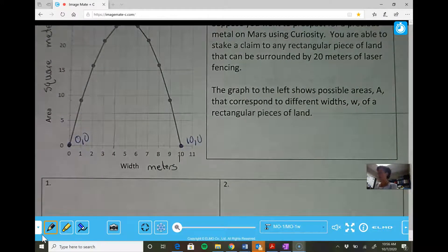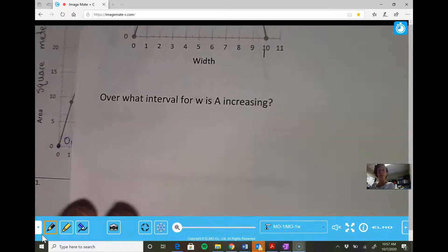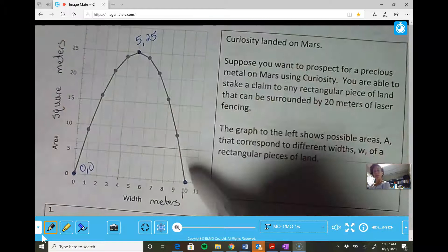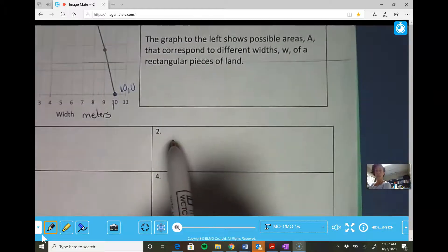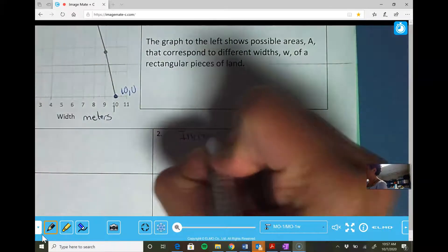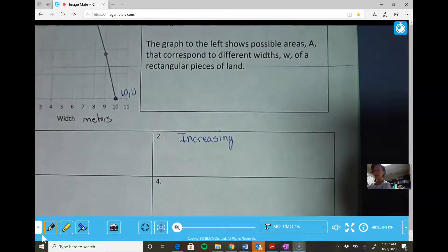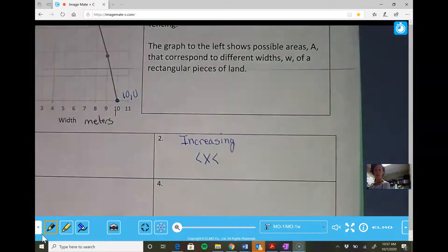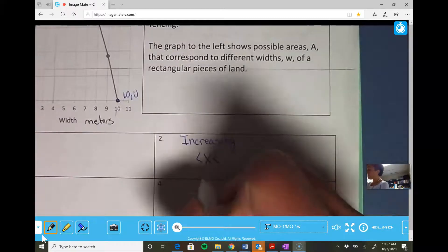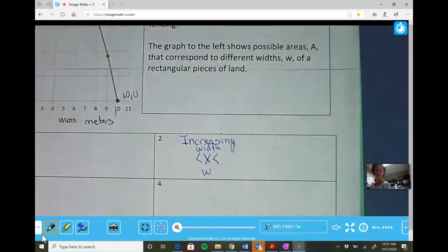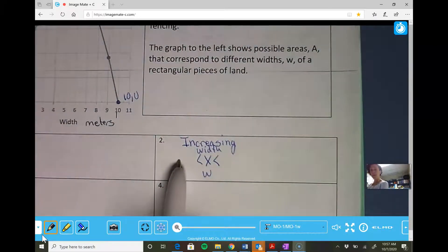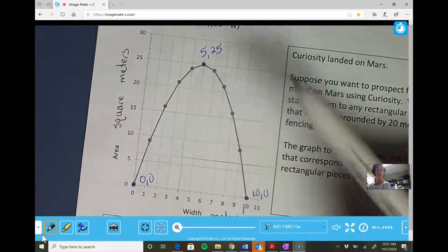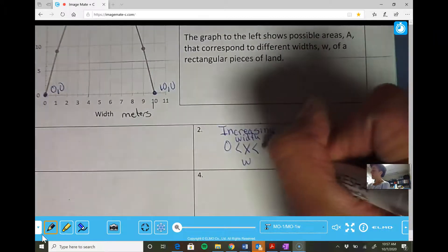Alright. Question two says, over what interval for W is A increasing? So I'm looking for my increasing interval and this is my increasing and this is my decreasing. So for question two, I'm going to put my increasing interval. And it says over what interval for W. When we do this whole thing, we usually use X with our between symbols. And if you don't want to use X, you could use W. You can actually write the word width. That's totally up to you. And I want to put where does that increasing start and where does it end? And I use the X value. So it starts at zero until it gets to the top at five. So zero to five. And that one's done.